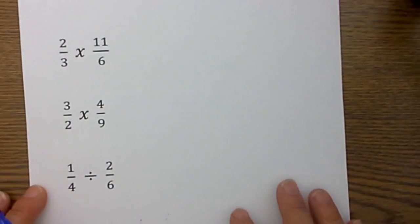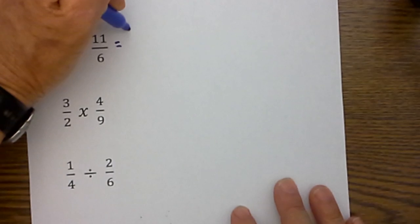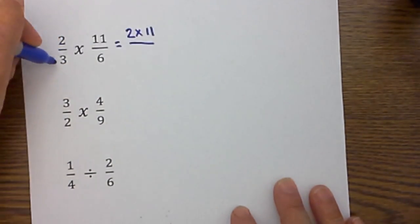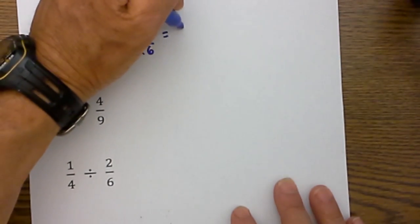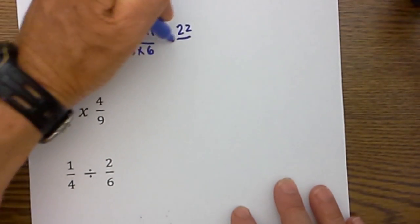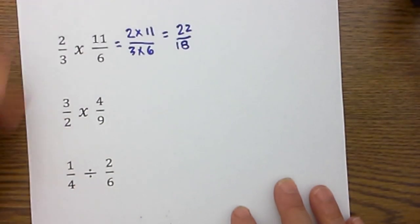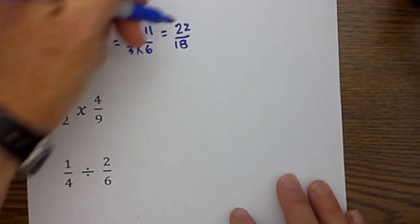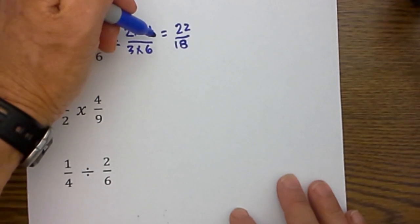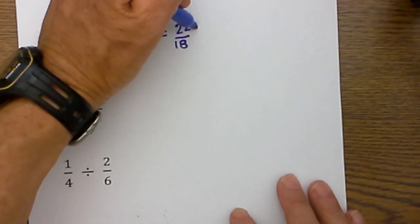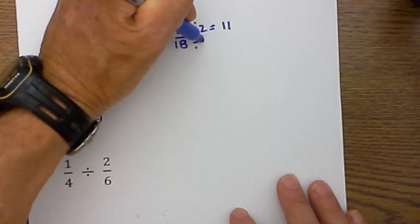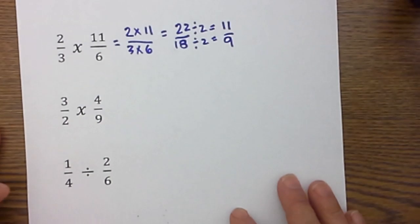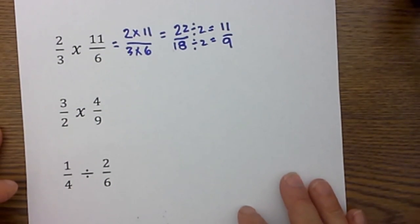Let's work a couple more examples. In this next one you have 2 times 11 over 3 times 6. 2 times 11 is 22, and 3 times 6 is 18. I know I can simplify by dividing each by 2, so 22 divided by 2 is 11 and 18 divided by 2 is 9. At this point it is simplified to 11/9.